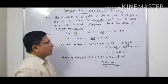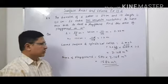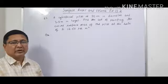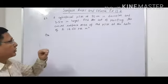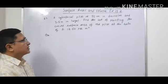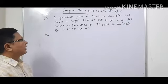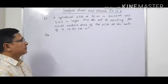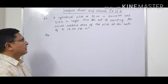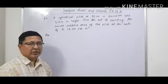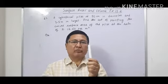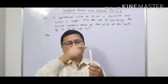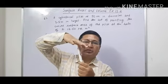So the area of playground in meter square is 1584 meter square. Now let us solve question number 5 of exercise 13.2. A cylindrical pillar is 50 centimeter in diameter and 3.5 meter in height. Find the cost of painting the curved surface area of the pillar at the rate of rupees 12.50 per meter square. Now let us consider this as a pillar, so we have to paint the outer curved surface area.